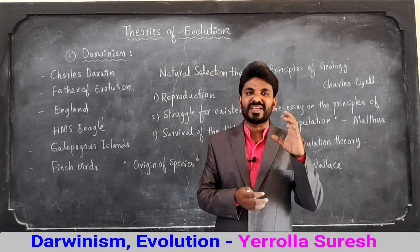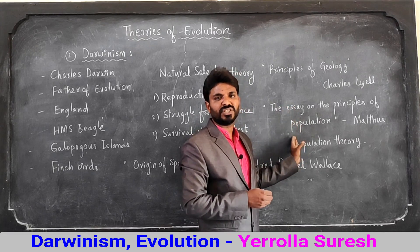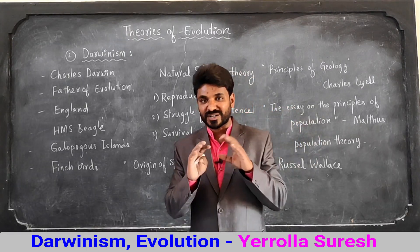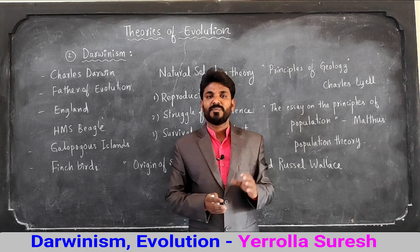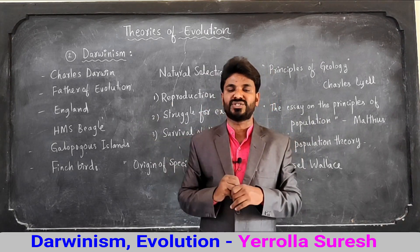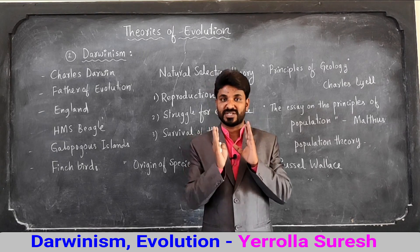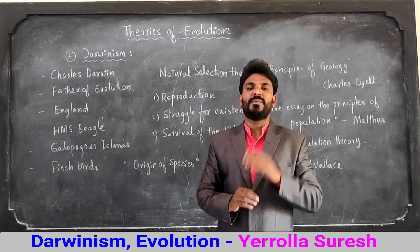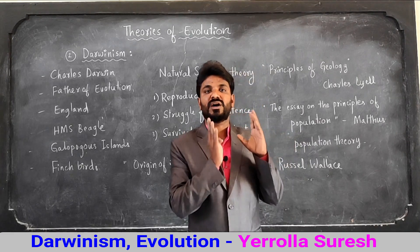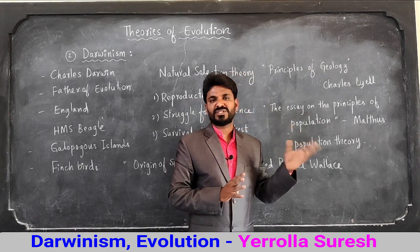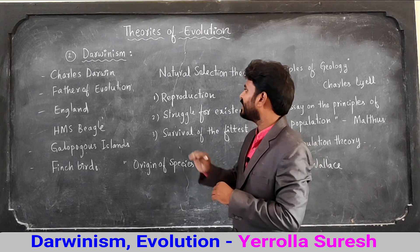Darwin rejected Lyell's idea and believed that changes are not uniform in organisms — that smaller changes in organisms lead to bigger changes. In Malthus's population theory, Malthus states that the population of organisms increases in geometrical progression whereas the food material for that population increases in arithmetic progression. Based on that, population increases very fast but food material increases somewhat slowly, meaning some changes occur fast and some occur slow.